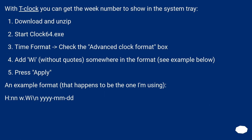With T-Clock you can get the week number to show in the system tray. Download and unzip. Start clock64.exe. Go to Time Format, check the Advanced Clock Format box, and add 'Y' (without quotes) somewhere in the format. See the example below. Press Apply. An example format that I'm using: hnnw.y\nyamdd.